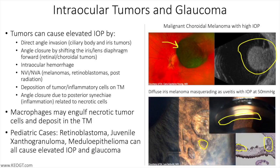Regarding incisional surgery, all filtration surgeries should be avoided in cases where active tumor exists in the eye. There are documented cases of intraocular tumor cells being liberated from inside the eye into filtration blebs when tumors are not recognized prior to glaucoma surgery. In cases where radiation has already been completed and tumor egress is noted, filtration surgery including glaucoma drainage device implantation is a valid choice and has been proven successful in published literature.